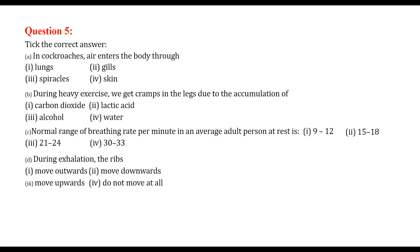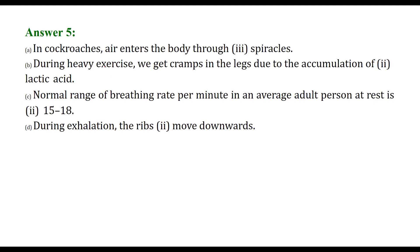Fill in the correct answers: In cockroaches, air enters the body through spiracles. During heavy exercise, we get cramps in the leg due to the accumulation of lactic acid. The normal range of breathing per minute in an average adult person at rest is 15 to 18. During exhalation, the ribs move downwards. So the answers are: spiracles, lactic acid, 15 to 18, and move downwards.